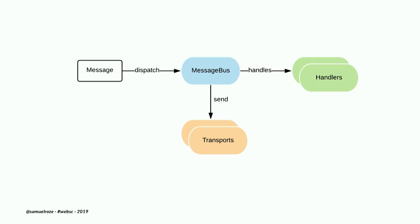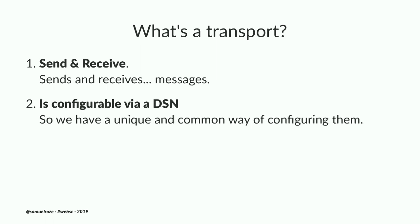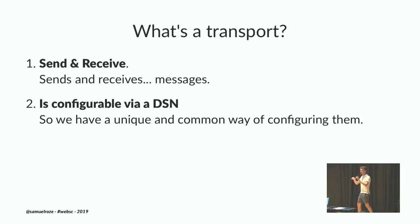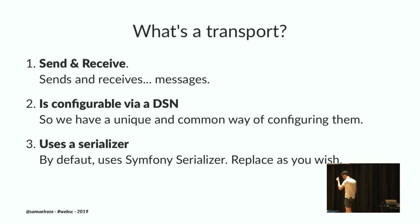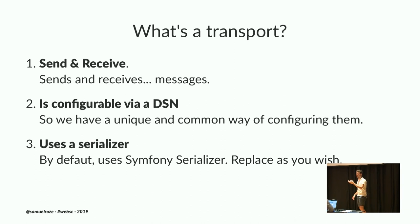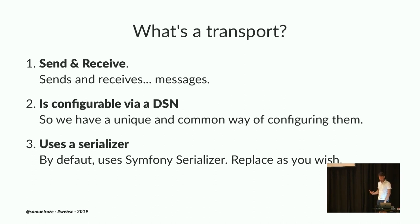A transport is just something that sends and receives messages. Like the database URL in Doctrine — Postgres, MySQL, etc. — a transport is configurable using a DSN. It uses a serializer, and this is super important: as soon as you use asynchronous processing and queues, your messages need to be serializable. Don't put resources or non-serializable things into messages. By default it uses the Symfony serializer, which you can replace.